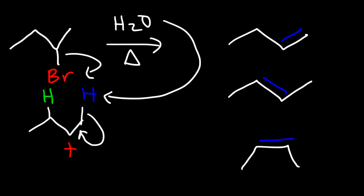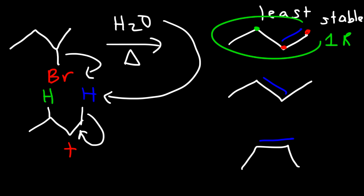Which of these is the major product? Internal alkenes are more stable than terminal alkenes, so 1-butene is the least stable and therefore a minor product. You also need to know that tetrasubstituted alkenes are more stable than trisubstituted alkenes, which are more stable than disubstituted alkenes and so forth. 1-butene is a monosubstituted alkene — there's only one R group. To determine the substitution of an alkene, identify the two carbon atoms that make up the double bond and count how many carbon atoms are attached to those double-bonding carbons. In this case, there's only one, so it's a monosubstituted alkene.